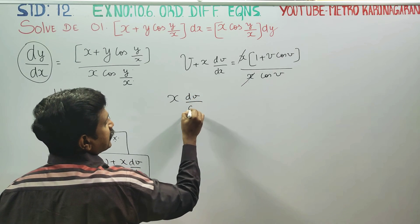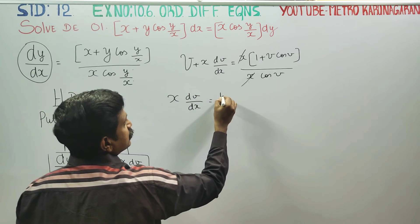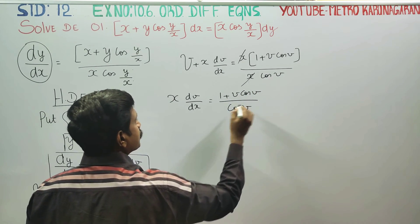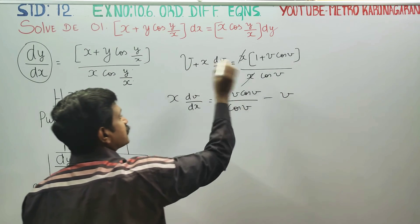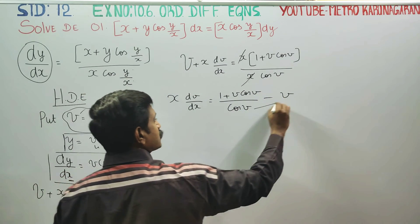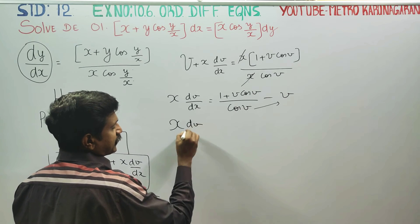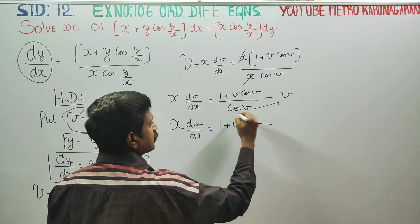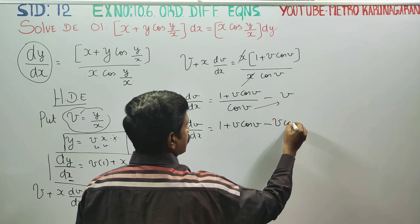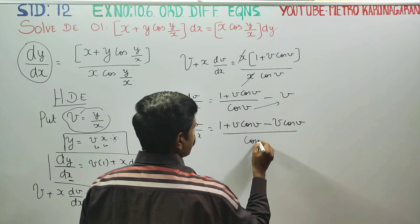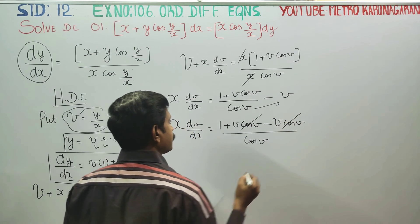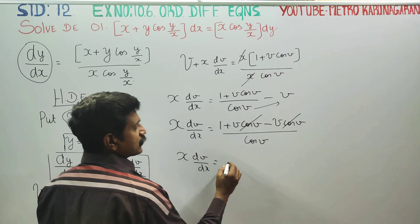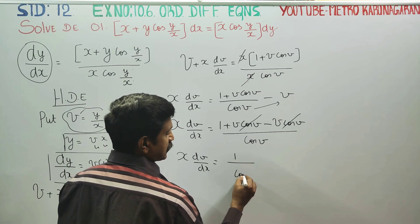So dv by dx is equal to (1 plus v cos v) divided by cos v, minus v. Cross multiplying: x dv by dx equals (1 plus v cos v minus v cos v) divided by cos v, which simplifies to x dv by dx equal to 1 by cos v.